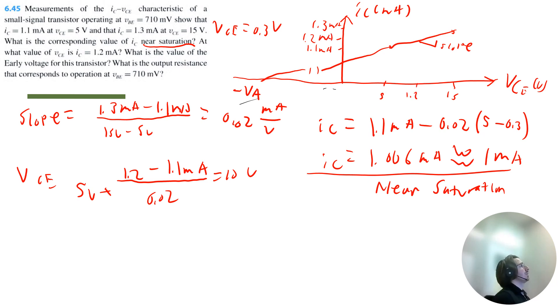So we can add this point to the curve. So VCE equals 10 volts when IC equals 1.2 milliamps.